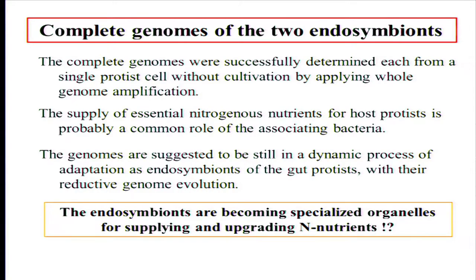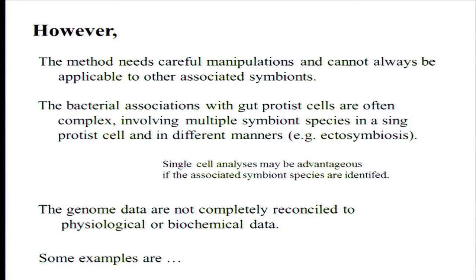Complete genomes were successfully determined from single protist cells without cultivation. The supply of essential nutrients for host protists is probably a common role of the associating bacteria. The genomes suggest a dynamic process of adaptation as endosymbionts of gut protists, with reductive genomic evolution. We consider the endosymbionts are becoming specialized organelles for supplying and upgrading nitrogenous nutrients.